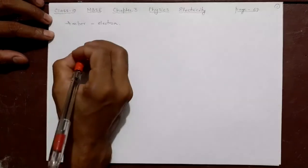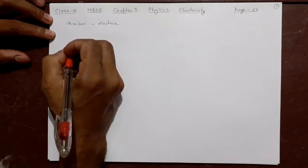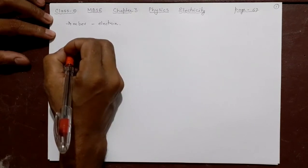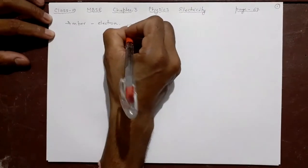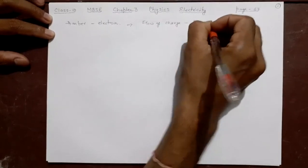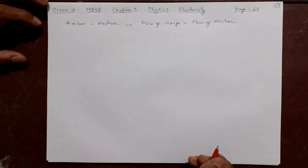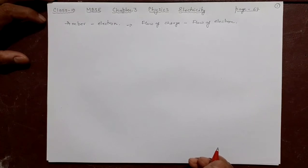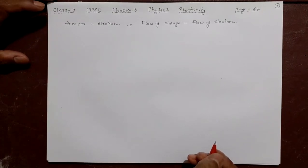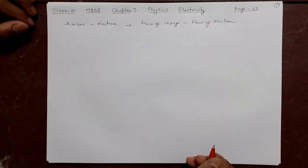This is electric current, and that is the main part we want to study. Current electricity is the study of the flow of charge. The flow of charge is nothing but the flow of electrons — moving charges. Whenever they move, we call that electricity. Whatever external thing produces electric charge to flow through a conductor, that is called electric field.